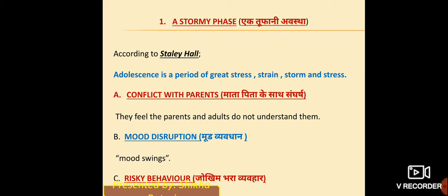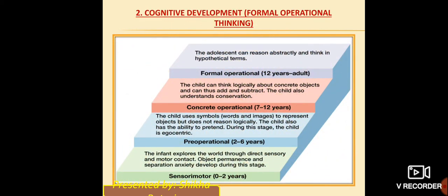Next is risky behavior — jokhim bhara vyavhar. This is a stage where the child shows risky behavior. For example, if results are bad, they may take a drastic step like suicide. They don't accept their weaknesses, which causes their behavior to become risky at times. That is why this stage is called a stormy phase.